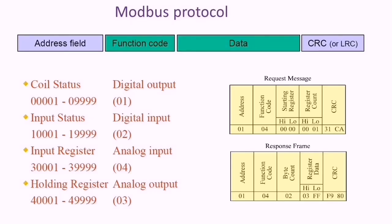A communication protocol is a set of formal rules describing how to transmit data. This includes synchronization information, address information, and error detection mechanism. Many protocols are used — examples include Profibus, Fieldbus, HART, DMP3, TCP/IP, MQTT, and Modbus, which we will discuss in detail here.